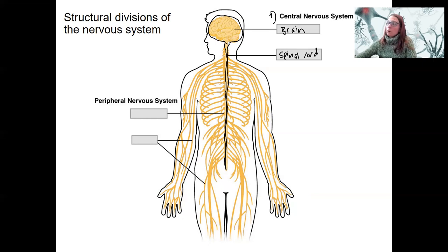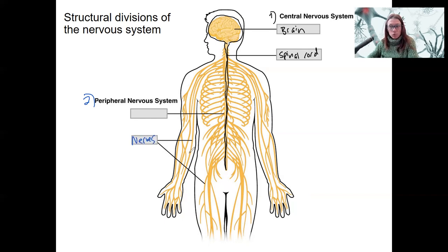Then we have the peripheral nervous system. This is composed of the nerves — this is probably what you think of when you think of the peripheral nervous system. Nerves are bundles of axons, specifically in the PNS.